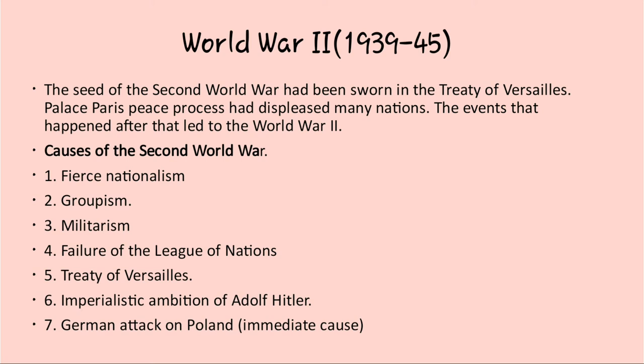The fifth cause is the Treaty of Versailles. As mentioned, the Treaty of Versailles itself was the reason for the next World War. Hitler called this treaty a piece of paper and rejected it. The sixth cause is the Imperialistic Ambition of Adolf Hitler. Hitler laid the foundation of the Second World War. His first victim of imperialism was Austria. Along with Germany, he entered Austria on 12th March 1938. The next day of the Munich Convention, Germany captured Czechoslovakia. This imperialistic policy of Hitler was the main cause of the Second World War.